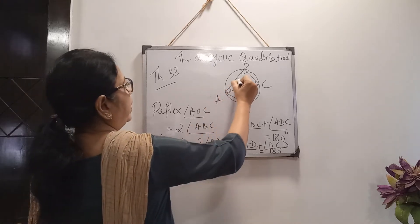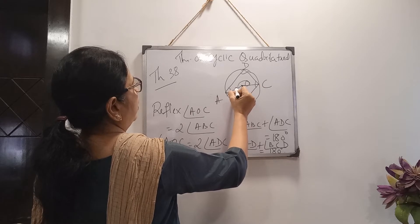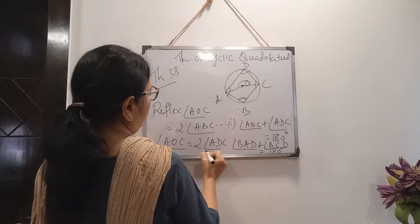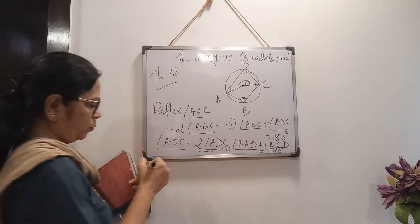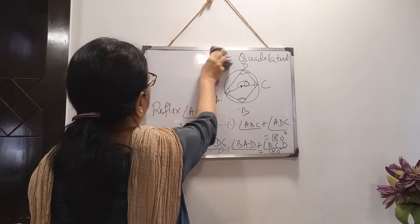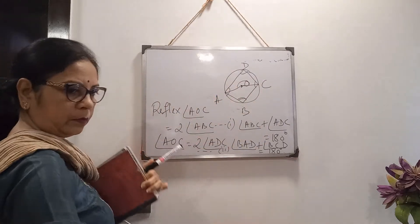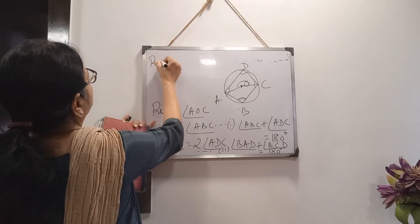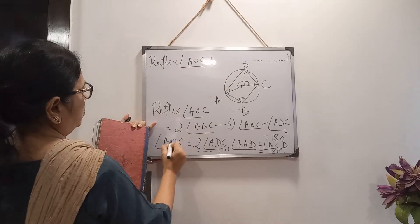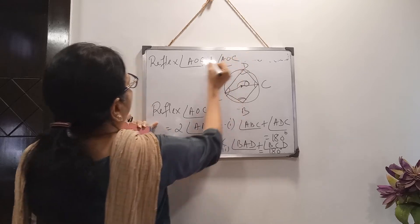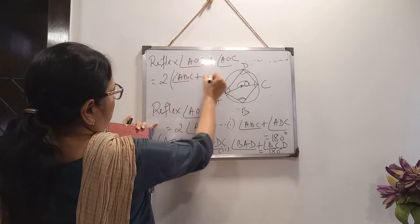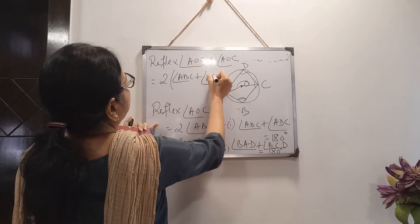So we have written: reflex AOC equals twice of ABC — equation 1 — and AOC equals twice of ADC — equation 2. Now we will add equations 1 and 2. On the left-hand side we get reflex angle AOC plus AOC, and on the right-hand side we can take 2 common to get twice of angle ABC plus angle ADC.